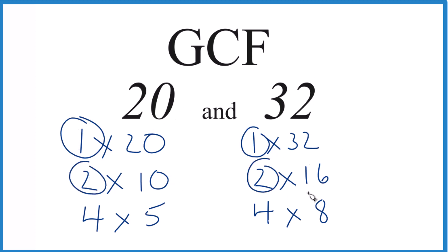And then it looks like 4 - that's going to be the largest number, the greatest common factor between 20 and 32.